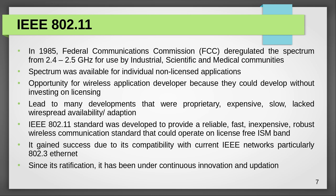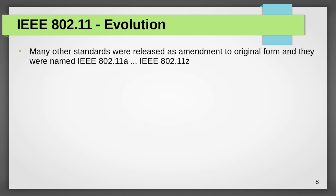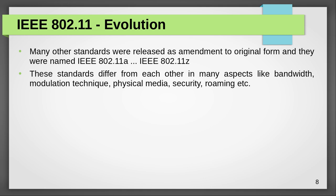What we call amendments to the basic protocol — the IEEE 802.11 evolution. Many other standards were released as amendments to the original form and named as IEEE 802.11a, 802.11b, and so on up to 802.11z, meaning versions from A to Z. The problem is these standards differ from each other in many aspects like bandwidth, modulation technique, physical media, security, and roaming, which created a lot of confusion about which standard to use.